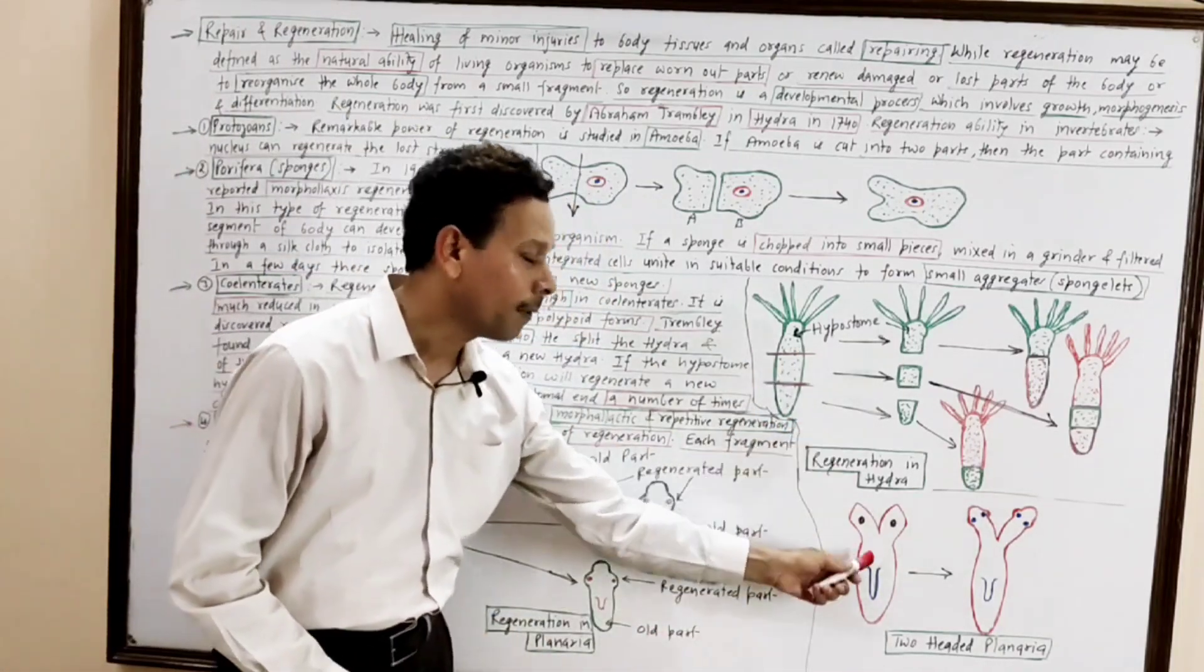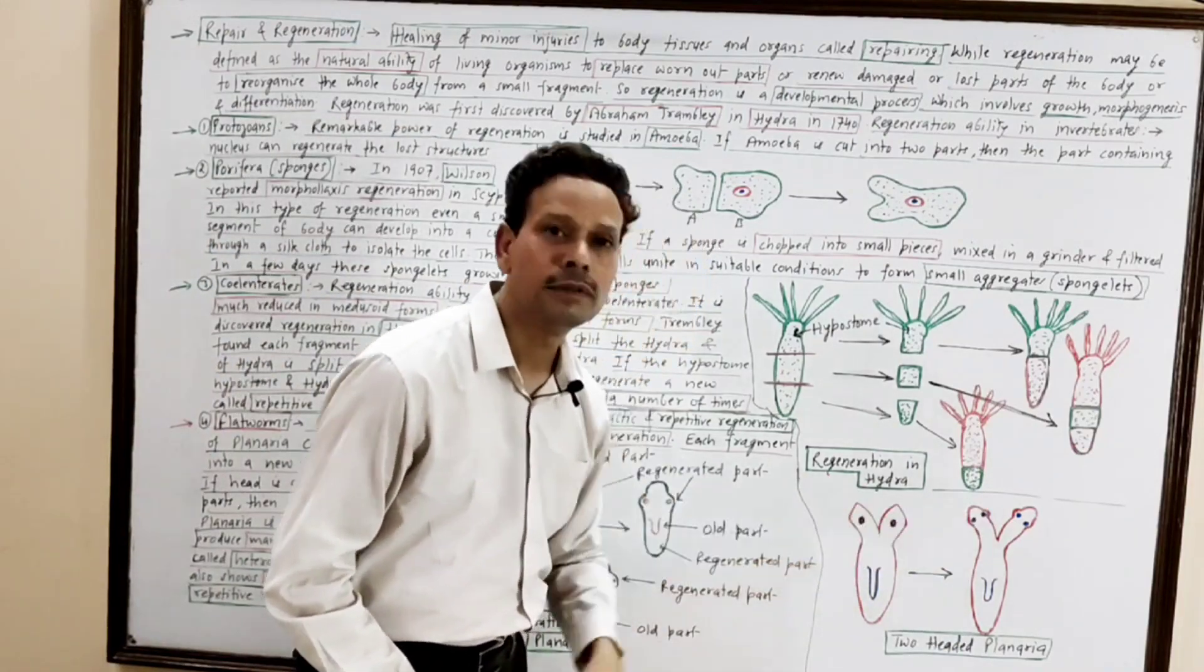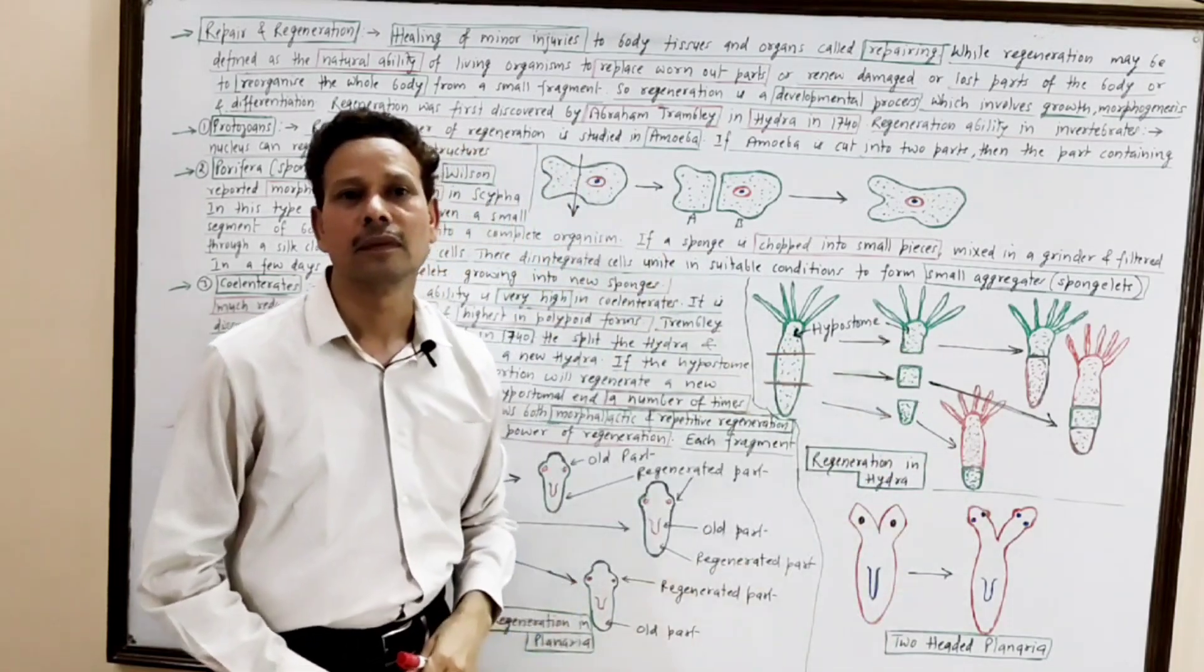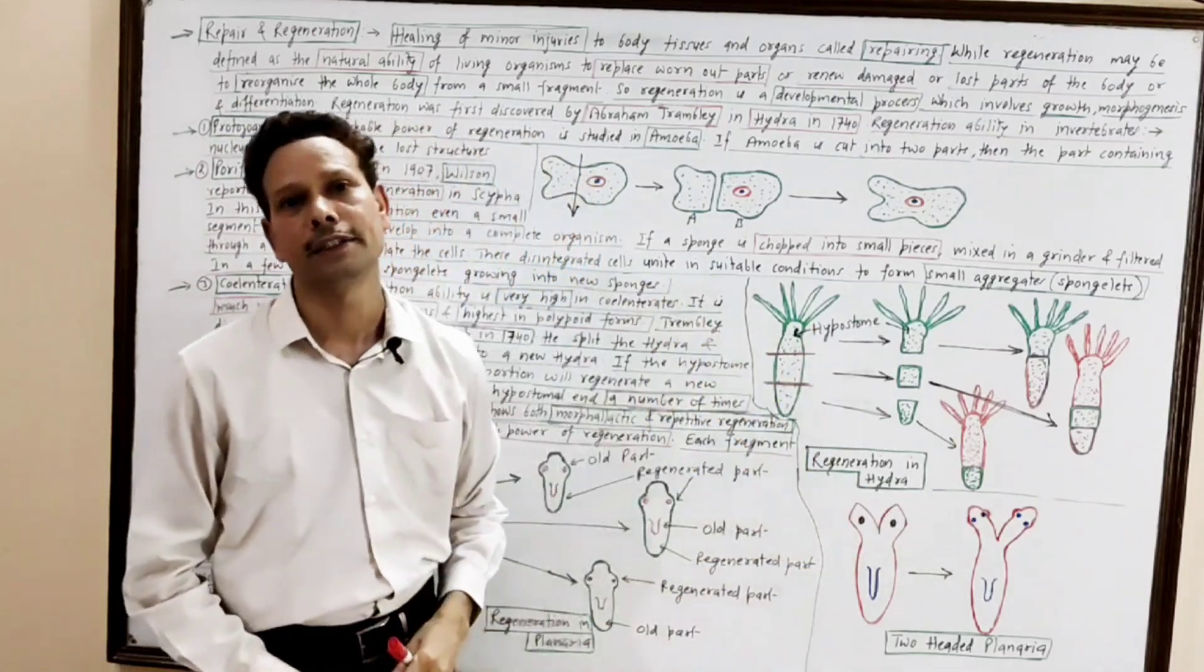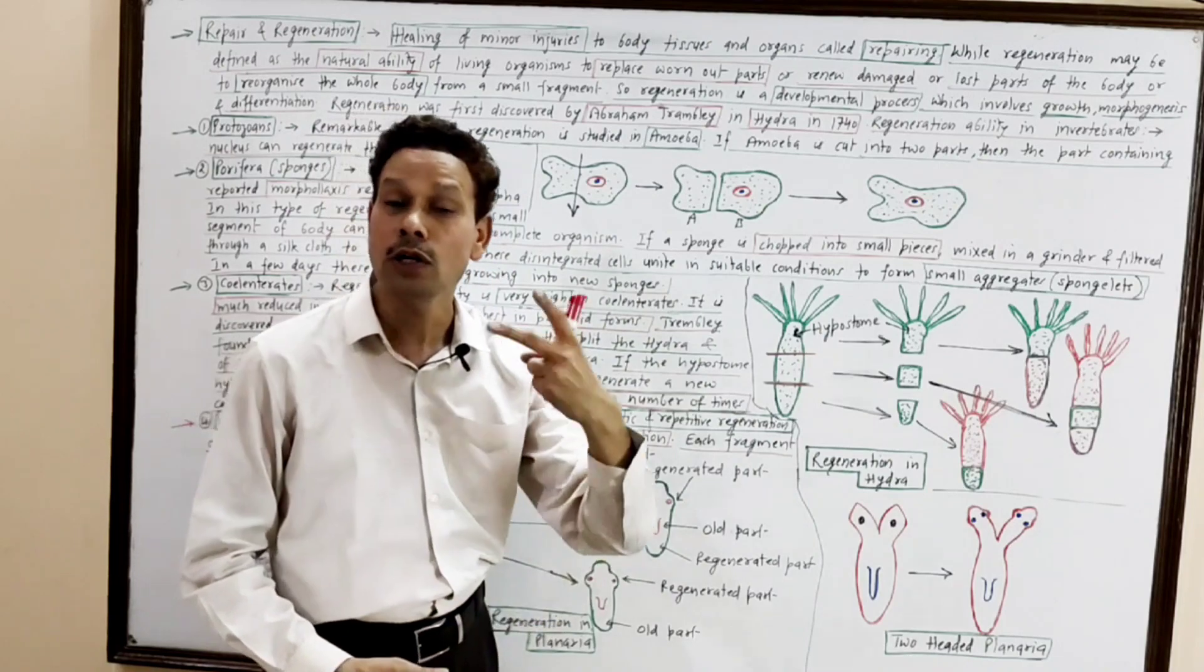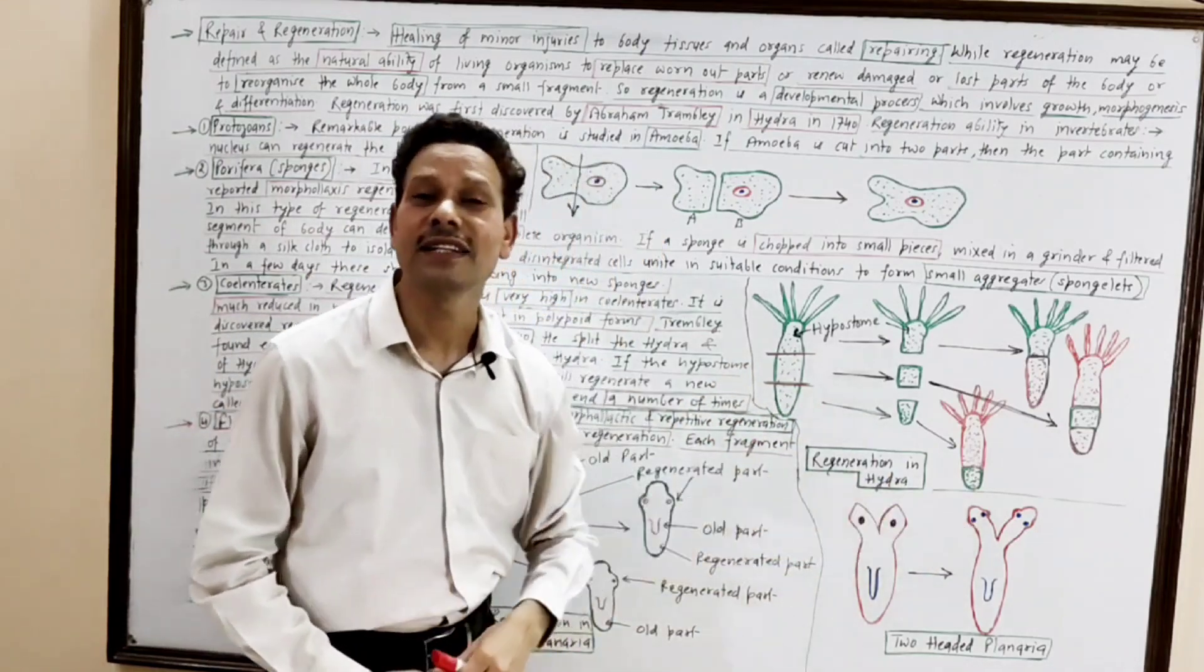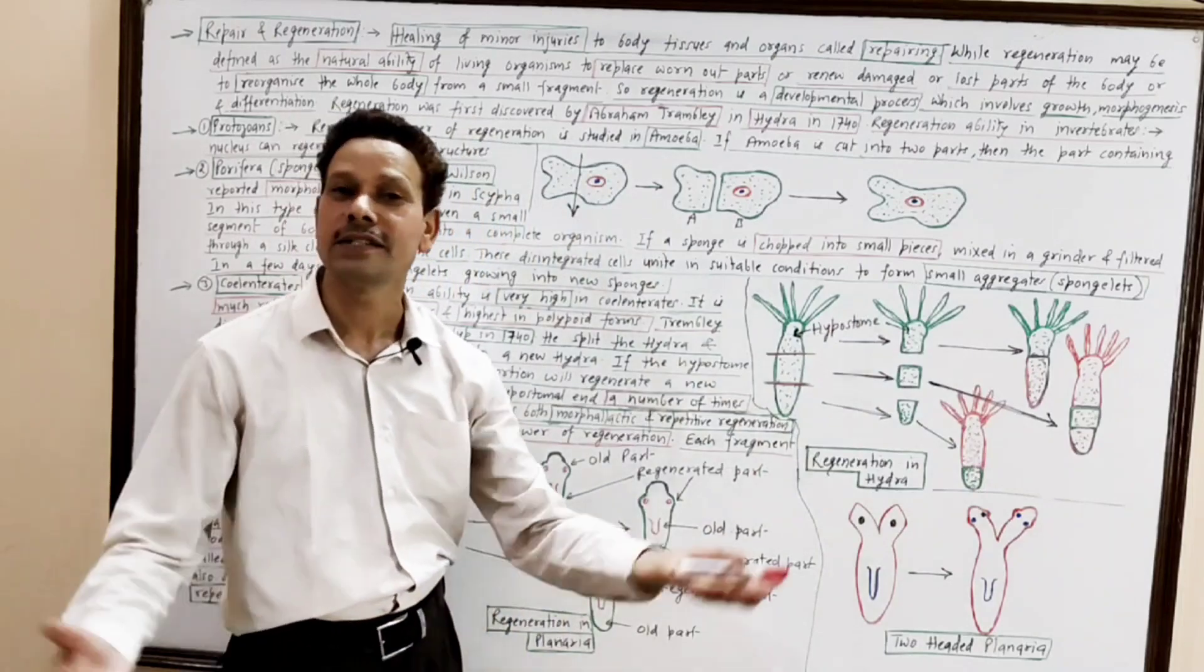Here, note down. This upper part, it is split into two parts. Each part gives rise a new head region. The planarian becomes two-headed, like Ravana. If the head is splitted into different parts, each part is capable to give rise a new head. It becomes multi-headed. It means, flatworms, planarians, also show both morpholactic, in which a small fragment is capable to give rise a new organism. As well as, this head region is capable to produce new head each and every time. It becomes multi-headed. It is repetitive regeneration.